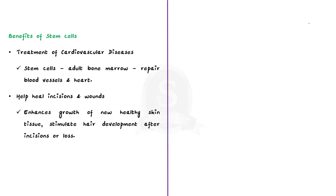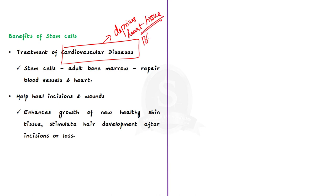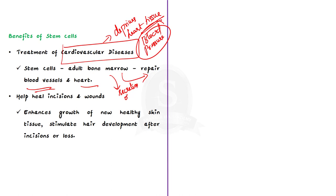Stem cells can be used in the treatment of cardiovascular diseases. Cardiovascular illness can deprive the heart tissue of oxygen, causing the formation of scar tissue which then alters blood pressure or blood flow itself. According to research, stem cells from adult bone marrow can differentiate into those required to repair the blood vessels and heart, and this is due to the secretion of numerous growth factors. So, the first use is treatment of cardiovascular diseases.